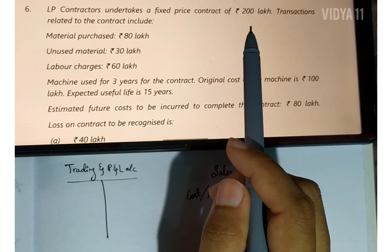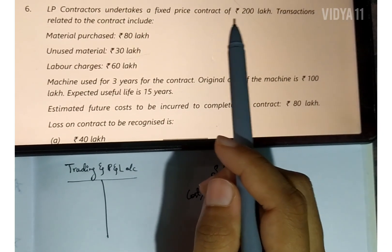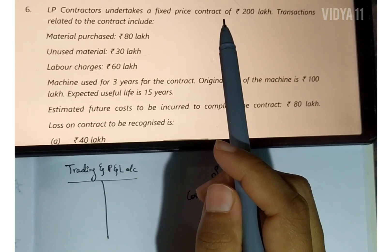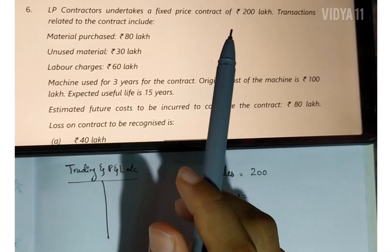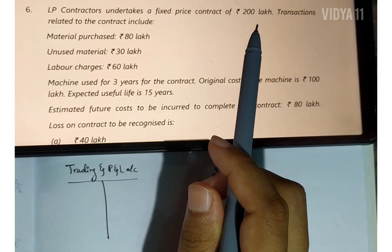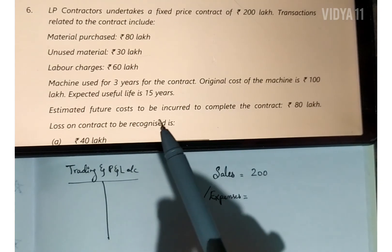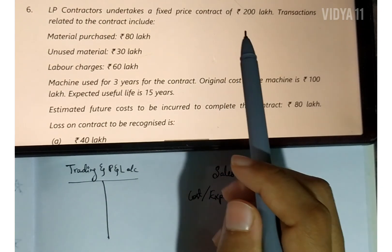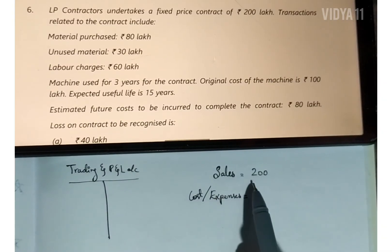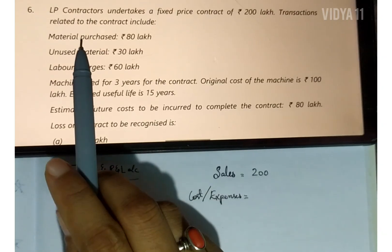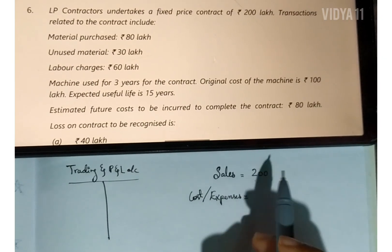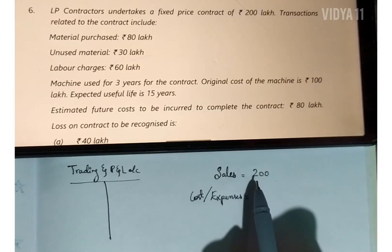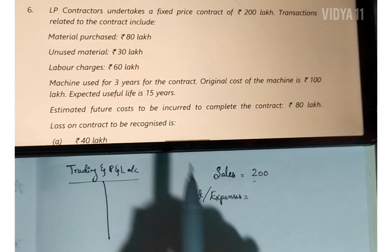This is a fixed price contract of 200 lakh. Whatever variation may happen in material cost or labor charges, we are going to get only 200 lakh as the sales value for providing the construction service. After completing the contract, we get 200 lakh — there is no change in it.